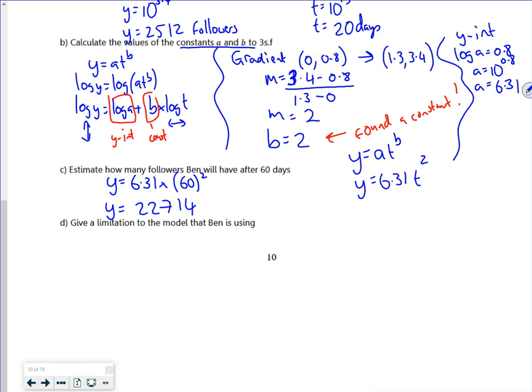So a limitation to this, it was a curve going up, wasn't it? It's going on forever and ever. So a limitation to this is that it implies an infinite number of followers.